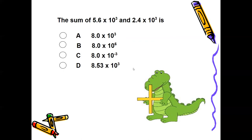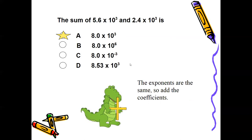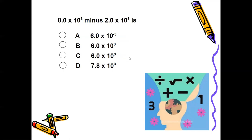A couple more quick examples with the same exponent. For the addition example, once you add the coefficients your final answer is 8 times 10 to the third power. For the subtraction example, both exponents are 10 to the third power; subtract the coefficients and your answer is 6 times 10 to the third power.